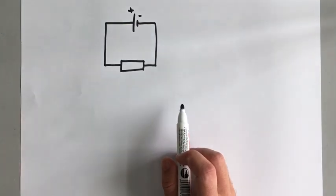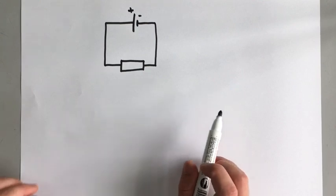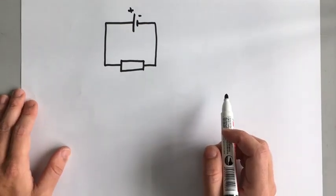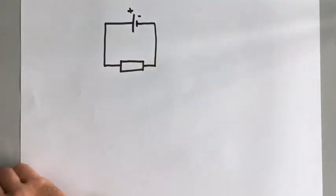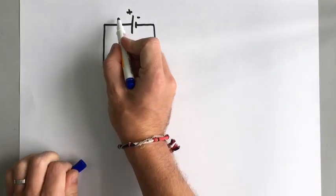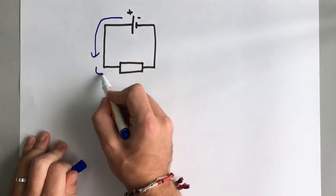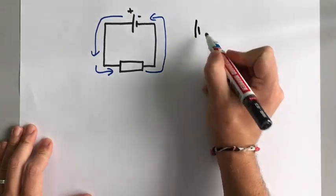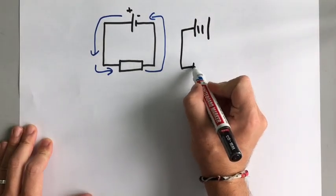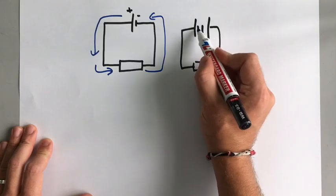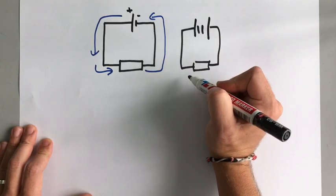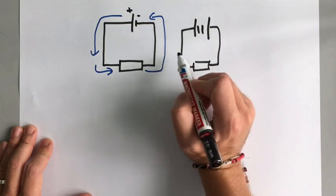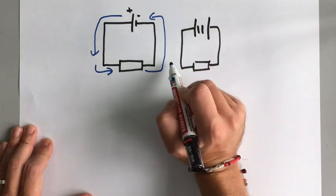Electrons are negatively charged, but before we discovered electrons, we discovered electricity. When electricity was first discovered, they thought current must go from positive to negative. So whenever we're talking about current, we are always talking about the current going from positive to negative. That means if you have two batteries oriented with negative ends touching, this battery tries to make electrons flow one way and the other battery tries to make electrons flow the opposite way, so they cancel each other out.